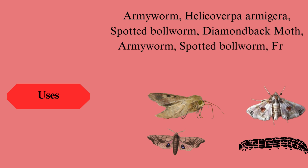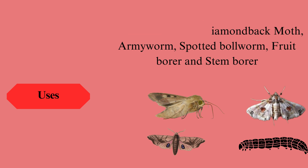Abamectin is recommended for controlling pests in various crops, including cotton (armyworm, Helicoverpa armigera, spotted bollworm), cauliflower (diamondback moth), potato (armyworm, Helicoverpa armigera), tomato (Helicoverpa armigera), okra (spotted bollworm, Helicoverpa armigera), and brinjal (fruit borer and stem borer).